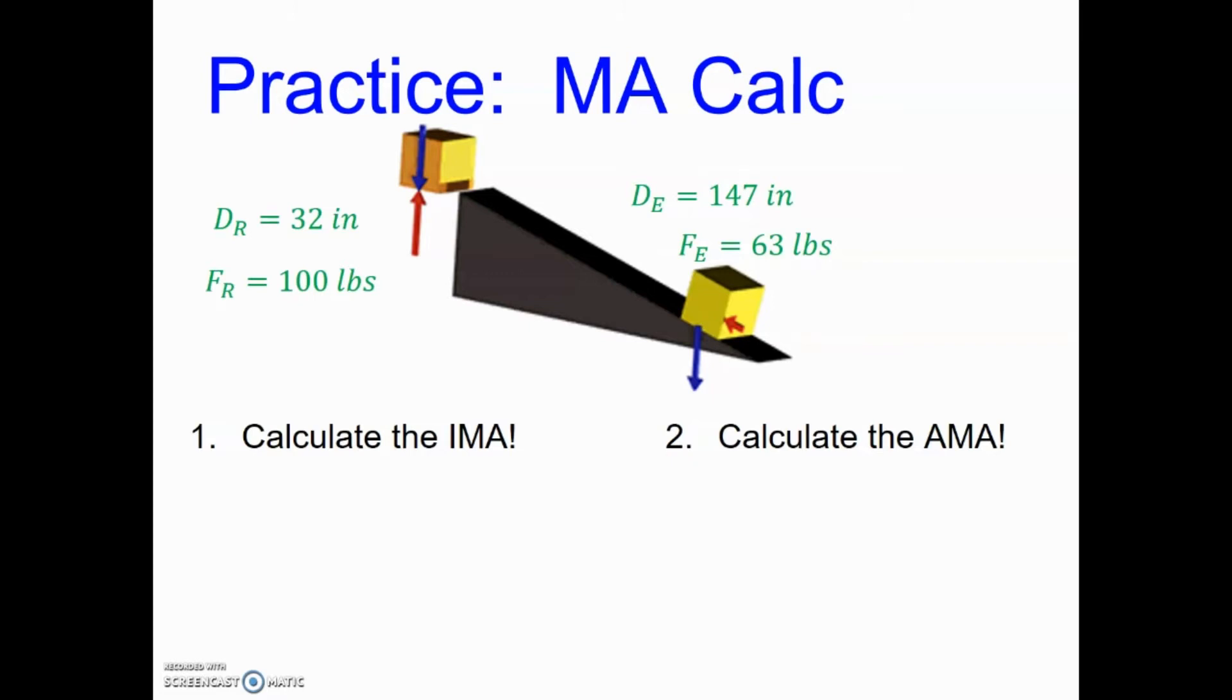So the resistance force is going to be the weight of that box and the resistance distance is where does it need to go from start to finish. Now I could hoof it up there but I would rather use a ramp. So in using a ramp my distance is increasing because I need to push it all the way up the ramp but the force that I need to apply to that box is going to drop which is represented by that 63 pounds. So let's calculate the IMA and let's calculate the AMA and compare those two together.